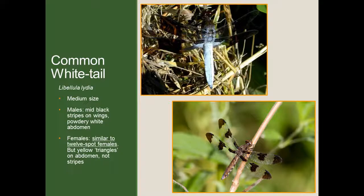The final skimmer we'll talk about is the common whitetail — once again, a medium-sized dragonfly that's very common by lakes and ponds. The males are pretty easy to identify: in the middle of all four wings they have a black stripe, but what you'll really notice is their powdery white abdomen, which is where they get their name. Females can be a little bit difficult — the female is very similar to 12-spot females. The best way to distinguish them is that 12-spot females have yellow stripes on the side of the abdomen, whereas common whitetail females have more of a triangular pattern rather than a complete stripe.